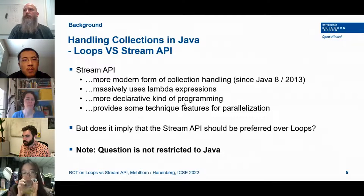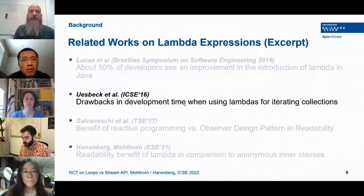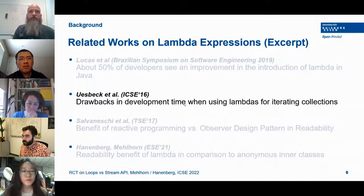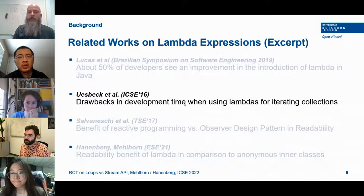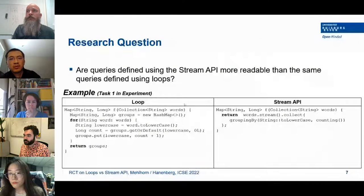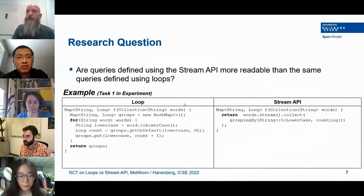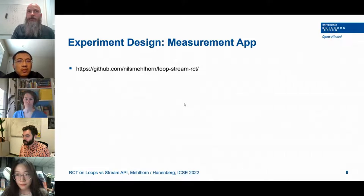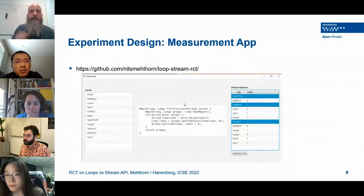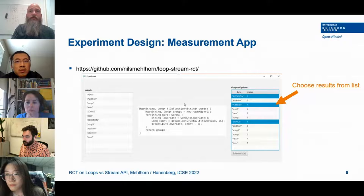Why do we think the question is relevant? Looking at related work, a study from ECOOP 2016 found that people have troubles writing code that contains lambda expressions — it's not really natural to have lambdas, so the resulting code may not necessarily be better or more understandable. We ran a randomized control trial: we give two different code representations to our developers and ask them what is the result of the code. Participants have a code snippet in the middle, see the input on the left, and must choose from output options on the right.